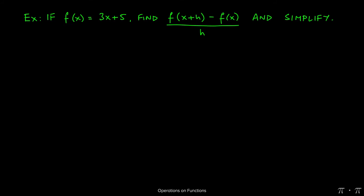Let's say we're given the function f of x equals 3x plus 5, and we're asked to find the strange looking thing f of x plus h minus f of x all over h. We're also told that not only do we need to find it, we also need to simplify it, so there might be a little bit of algebra involved towards the end.